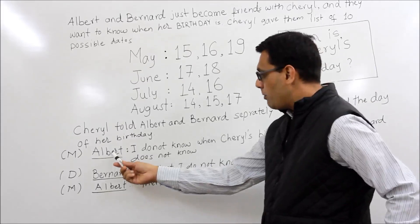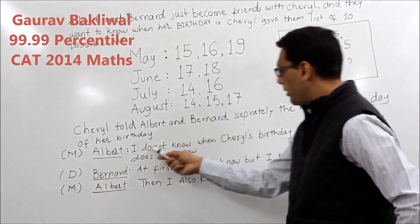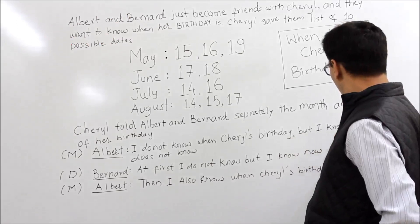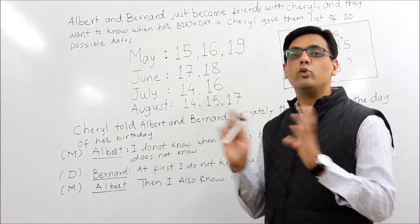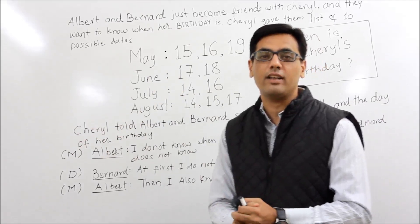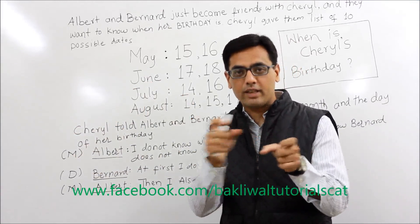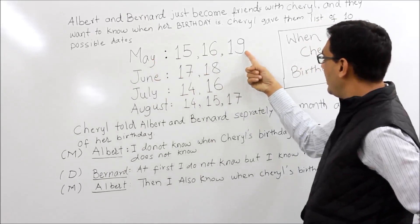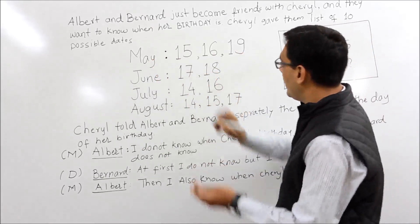Start from Albert. He says he does not know Cheryl's birthday. The person who has been given the month says 'I do not know Cheryl's birthday, but I know for sure that Bernard also does not know' — a very important line. The fact that he is so confident that Bernard will not know means the dates in his month must not be unique to any single month. Otherwise, how can he be sure about the other person? So we can definitely cut May and June — these two are definitely not the answer.